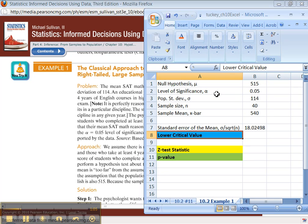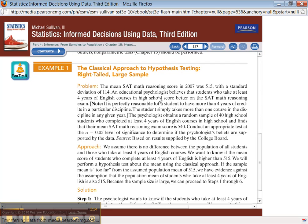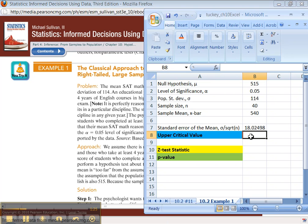Then I need, this is a right-tailed test here. They want to know whether or not test scores are increasing. So here I need an upper critical value, not a lower one. Again, all of that is based on beliefs that students score better, score higher. Alright, so it's an upper critical value.